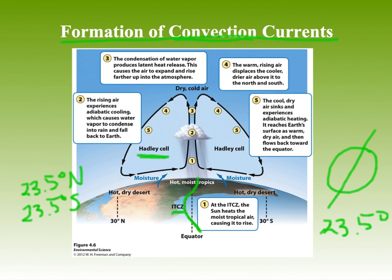When the sun hits near the equator between 23.5 degrees north and 23.5 degrees south, it's going to be hitting very directly. This causes warm, hot, moist air to heat up even more and rise. When it rises, it experiences adiabatic cooling — as air rises in the atmosphere, it experiences less pressure, increases in volume, and cools down. That cooled air then forms clouds, and the water vapor condenses and falls back to the ground as precipitation.